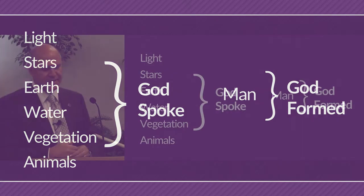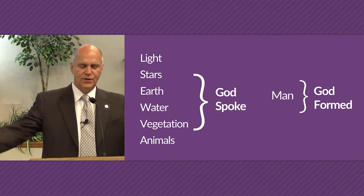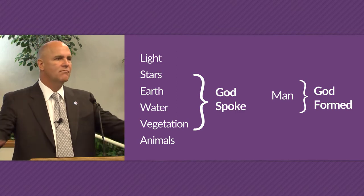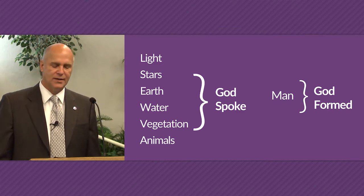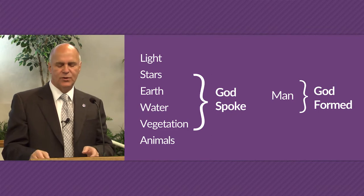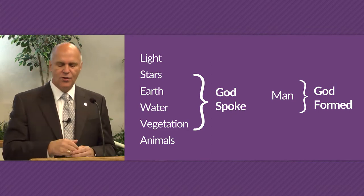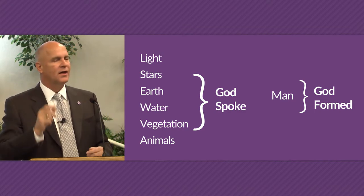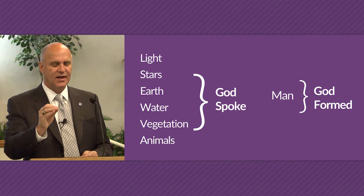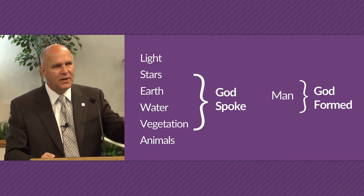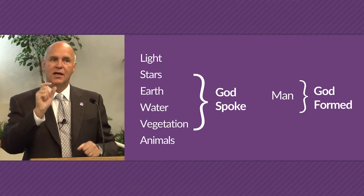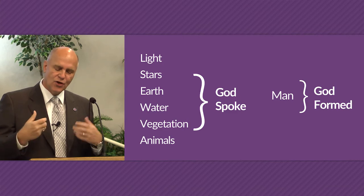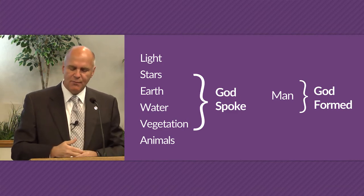Genesis 1:20 says, 'Let the waters teem with swarms of living creatures.' And what happened? They were created. But when it came to the being that was to exist in the image of God — the one who could see the stars, the one who could rule over the animals — God specifically formed a body. He didn't speak man into existence. He formed man. It's a different verb, a different action. So the human body was a unique and separate act of creation.